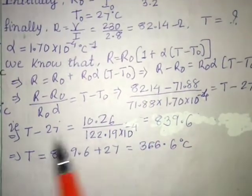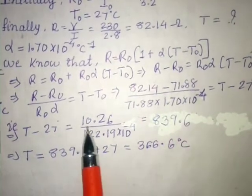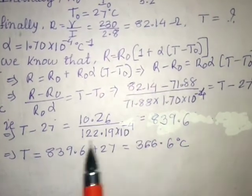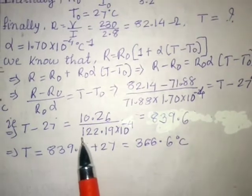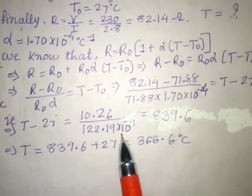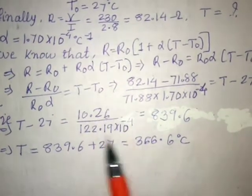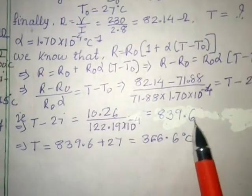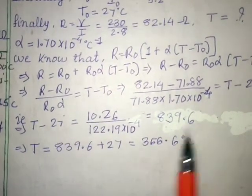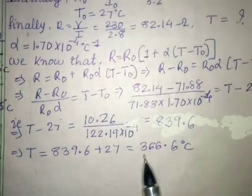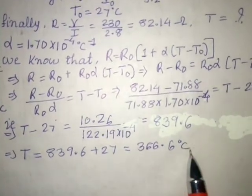When you simplify this difference is 10.26. And this when you multiply it is 122.19 times 10 to the power minus 4. This simplification is 839.6. And this is minus 27. You transfer this side it becomes plus. Add these two, the answer is 366.6 degrees Celsius.